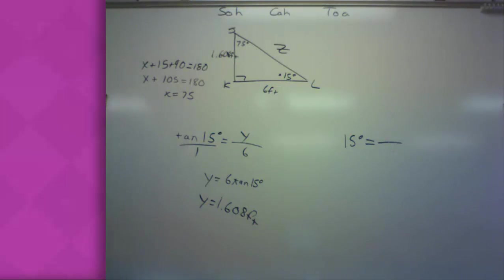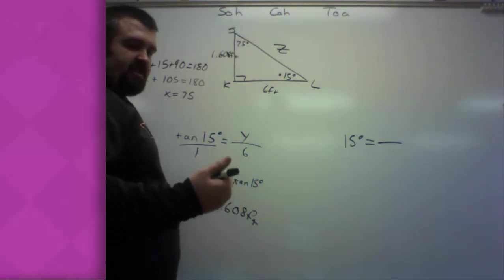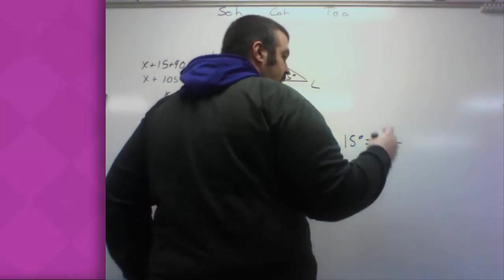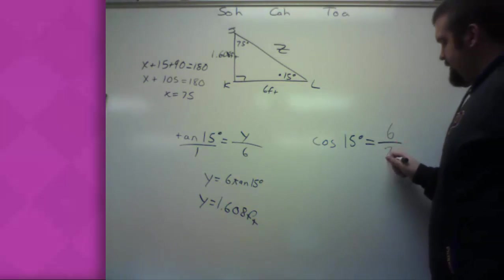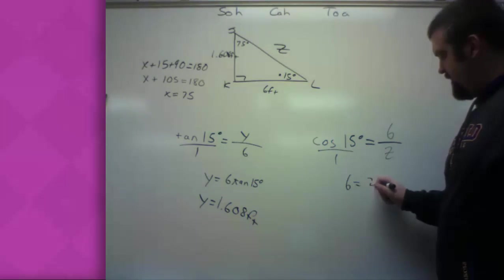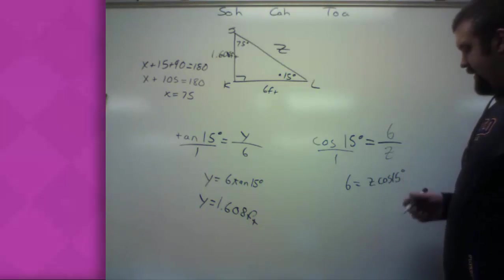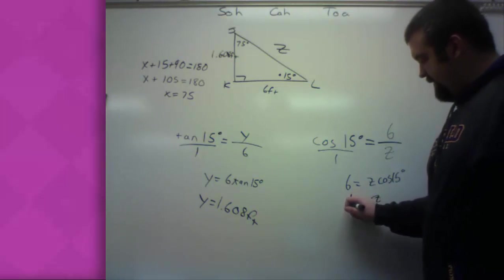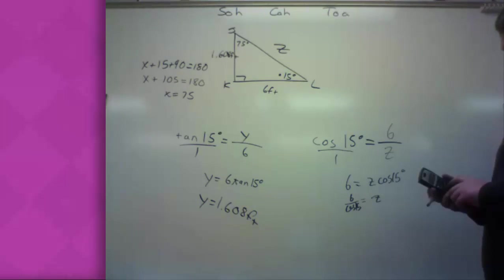Now, for Z. I still want to use 6, so I want to use adjacent. I'm looking for the hypotenuse. So adjacent hypotenuse, A-H. So-ka-toa. A-N-H is co. So cosine is what I put here. Adjacent comes first. 6 on top. H comes second. Z on bottom. This is a proportion, remember. Cross multiply. 6 equals Z cosine of 15. Z is not by itself, so I have to do more work. Divide both sides by cosine of 15.